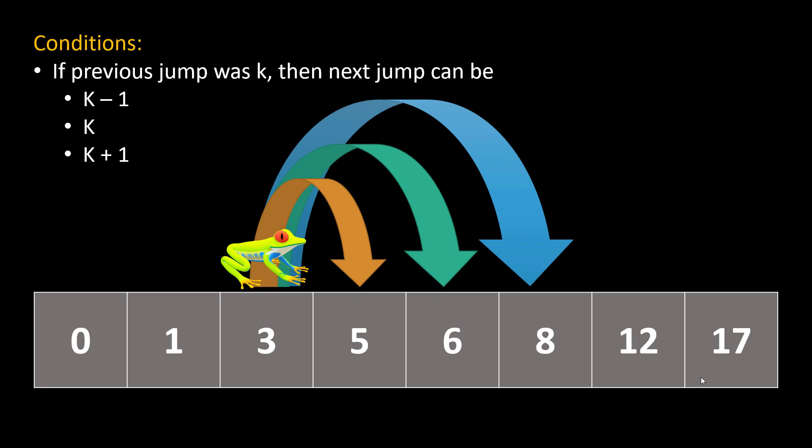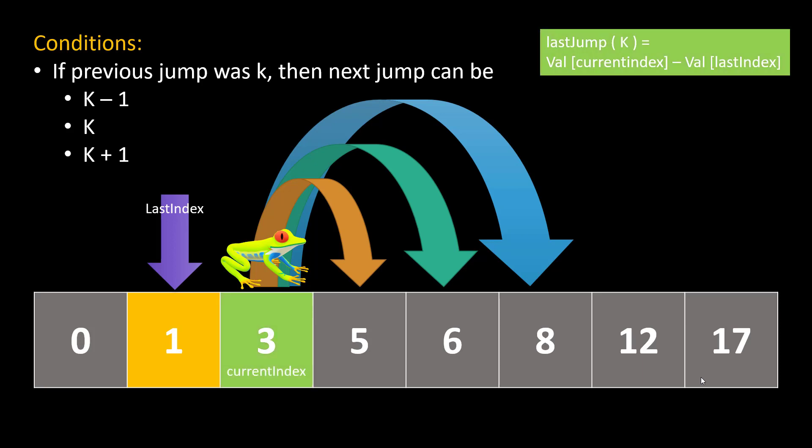We will make changes in our approach. If we just have the input array, what we really need is to check if we are able to reach the succeeding indexes from the current index, and continue until we reach the last index. We need to follow the condition that if the previous jump was k, then the next jump should be k-1, k, or k+1. The value of the previous jump is the difference between the values at the current index and the last index. So the index 1 becomes our last index and index 3 becomes our current index, and the last jump is the difference of the values at those two indexes.